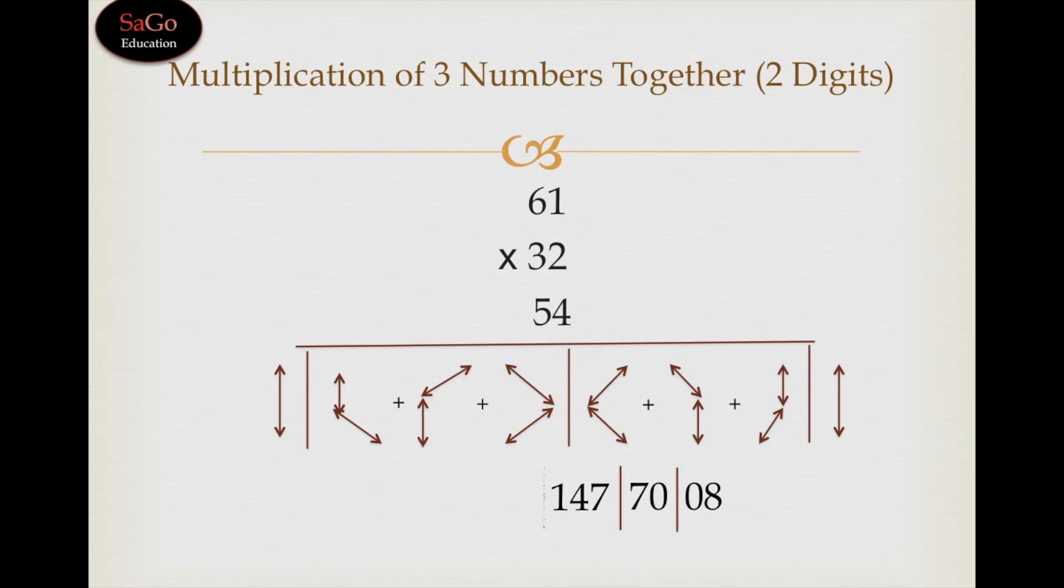Now put a slash and the last pattern which is 6 × 3 × 5. It will give us 90. Write down 90.